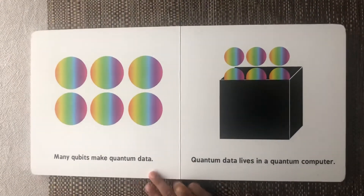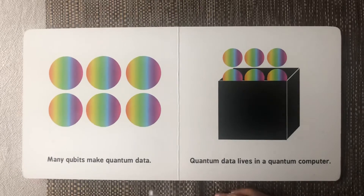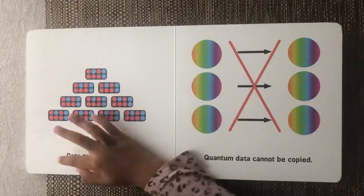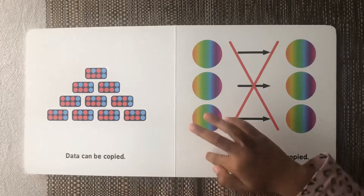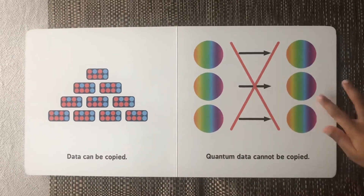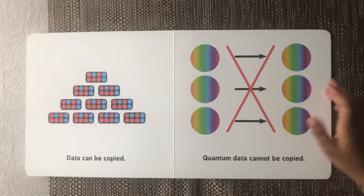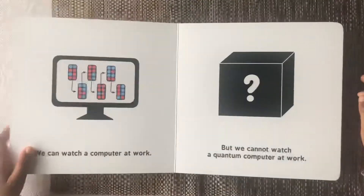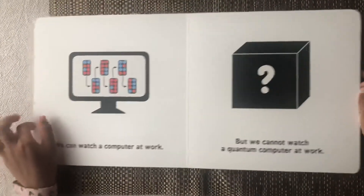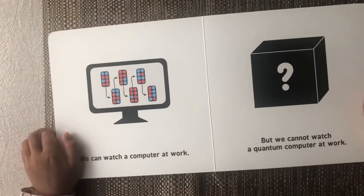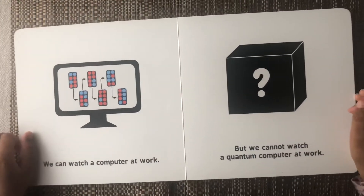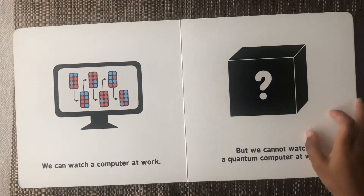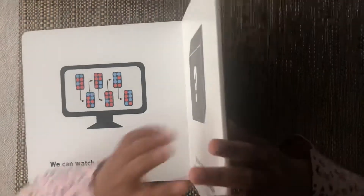Qubits make quantum data. Quantum data runs on a quantum computer. Regular data can be copied, but quantum data cannot be copied. We can watch our classical computer at work, but we cannot watch our quantum computer at work.